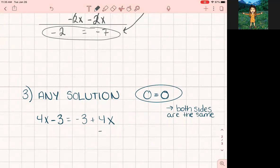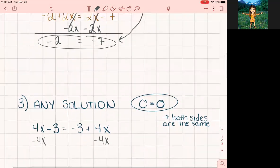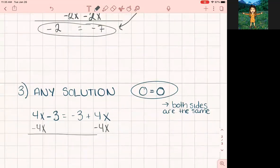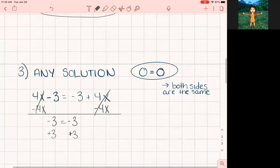We are going to subtract 4x. We're going to subtract 4x. Those are gone. Negative 3 equals negative 3. Those are gone. Okay, so we know that if we add 3 to both sides, that we're going to end up with 0 equals 0.